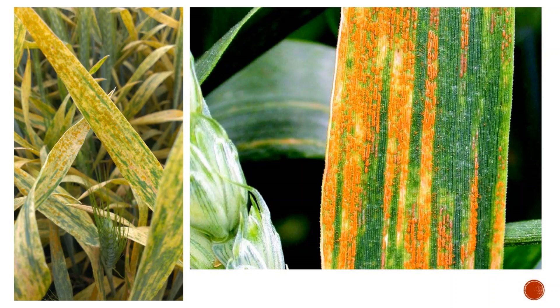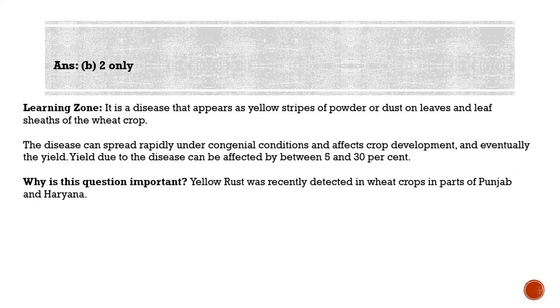The disease usually occurs early in the growing season when temperature ranges between 2 and 15 degrees, but it may occur up to a maximum of 23 degrees. High humidity and rainfall are favorable conditions for increasing the infection, which may affect crop development and eventually the yield. This question is important because yellow rust was recently detected in wheat crops in parts of Punjab and Haryana.